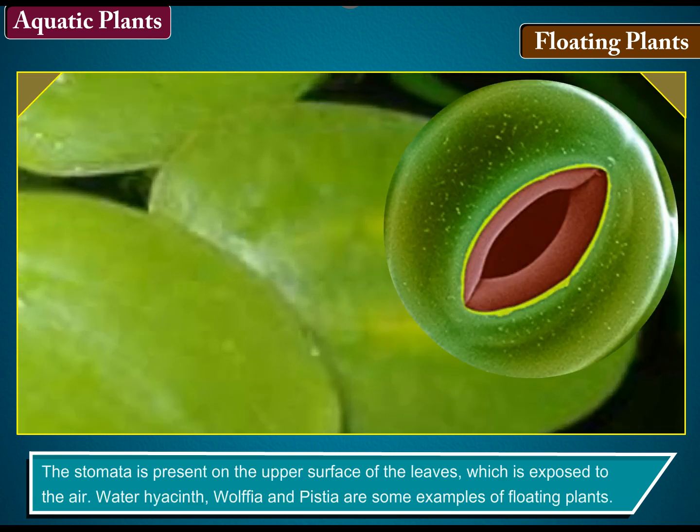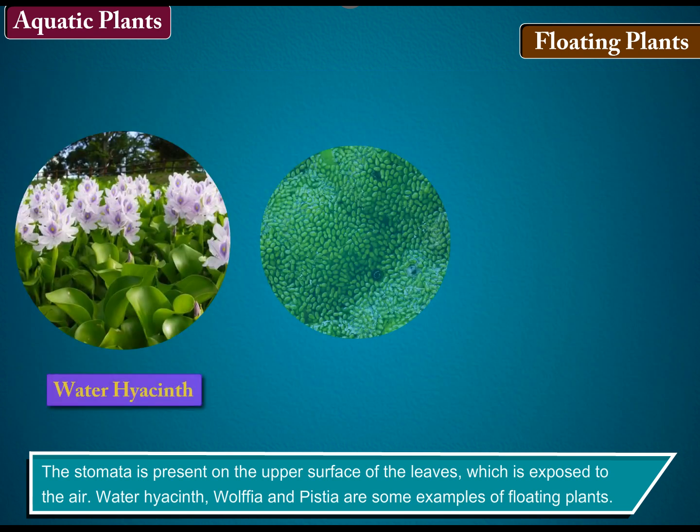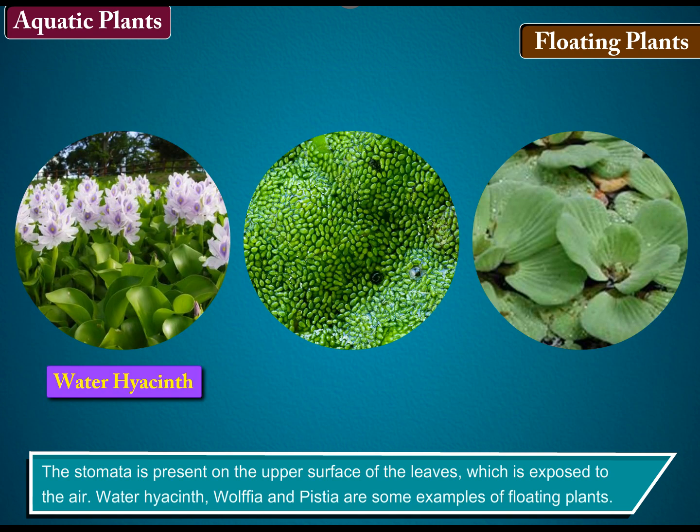The stomata are present on the upper surface of the leaves, which is exposed to the air. Water Hyacinth, Wolfia and Pistia are some examples of floating plants.